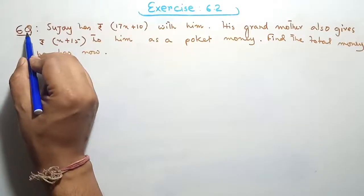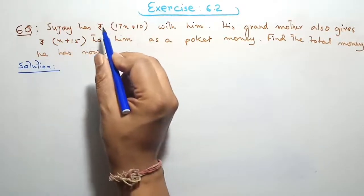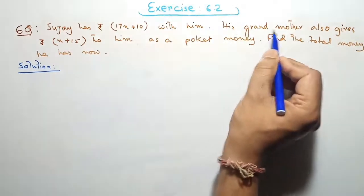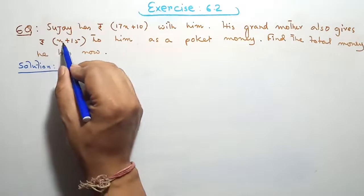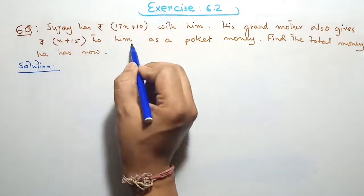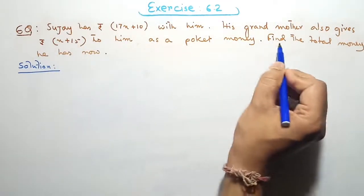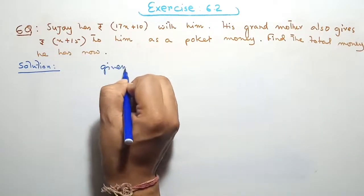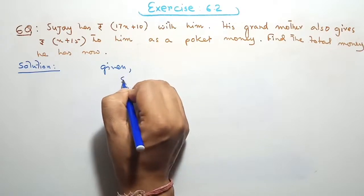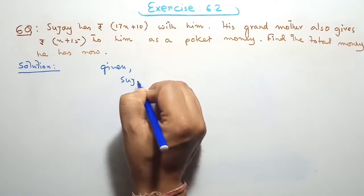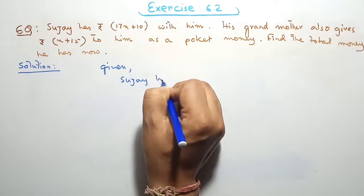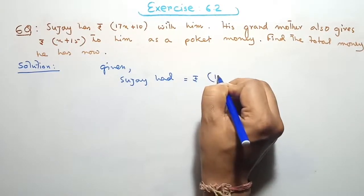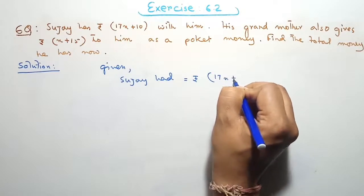Question 6. Sujoy has rupees 17x plus 10 with him. His grandmother also gives rupees x plus 15 to him as pocket money. Find the total money he has now. Given: Sujoy had rupees 17x plus 10.